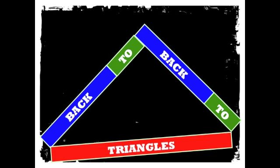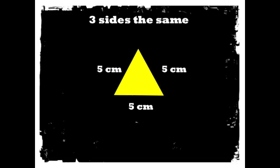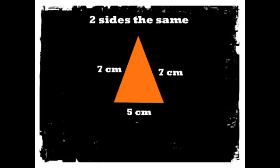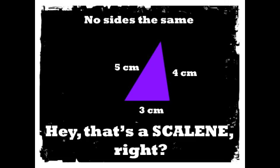Triangle types: three sides the same, equilateral. Two sides the same, isosceles. No sides the same, that's a scalene.